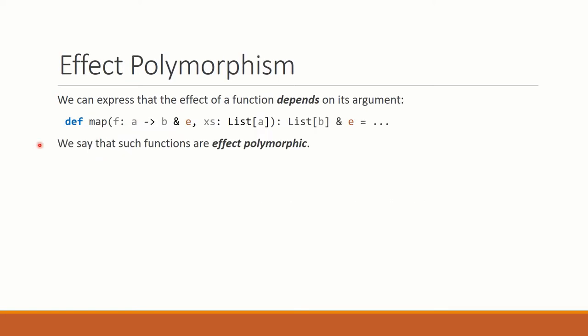As I said in the previous example, we can use our type and effect systems to express higher order functions where the effect of the function itself depends on its argument or arguments. Here is the signature for map. Map takes a function from A to B with effect E, and a list of elements of type A, and it returns a list of elements of type B with effect E. So this function, whether it has an effect or not, depends on whether its argument has an effect or not. We say that such functions are effect polymorphic.